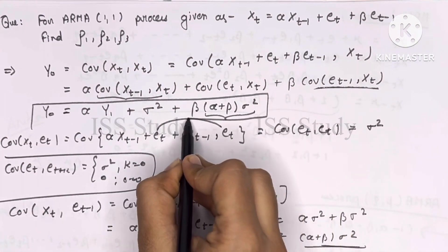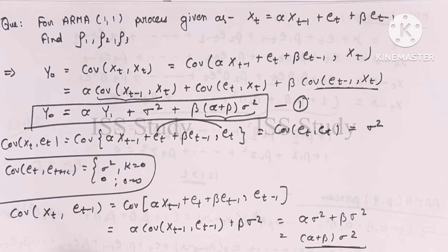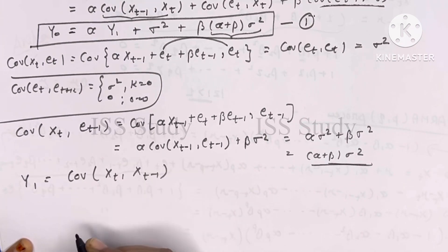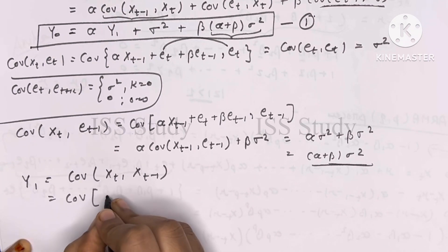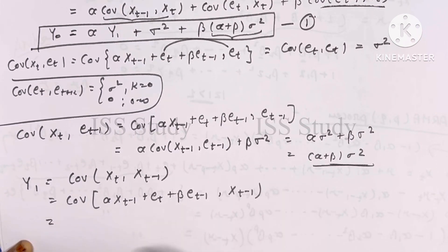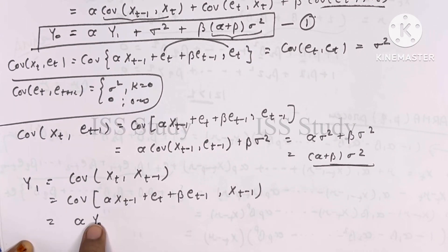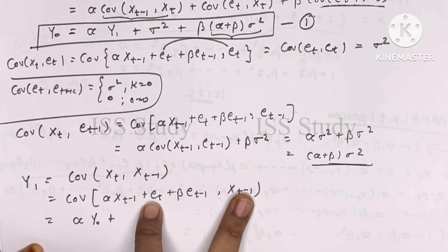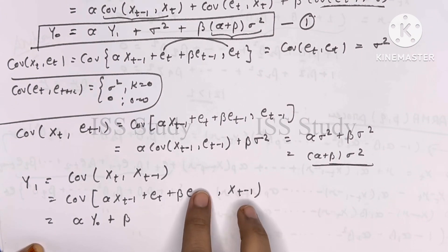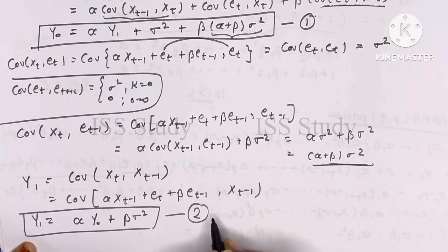So equation 1 for gamma_0 is now complete. Next, gamma_1 equals Cov(X_t, X_{t-1}). Substituting X_t: we get alpha*Cov(X_{t-1}, X_{t-1}) plus beta*Cov(epsilon_{t-1}, X_{t-1}), which gives alpha*gamma_0 plus beta*sigma^2. This is equation 2.